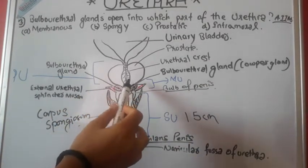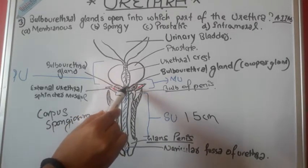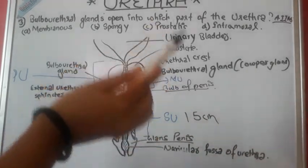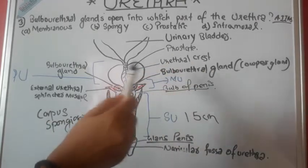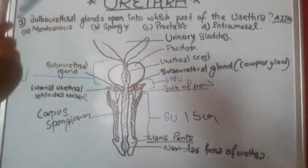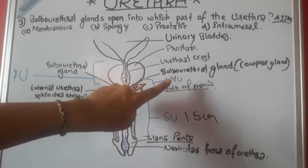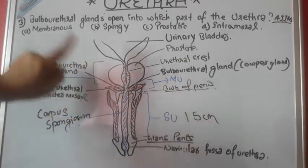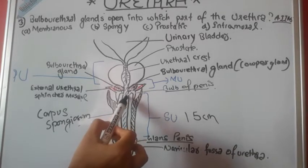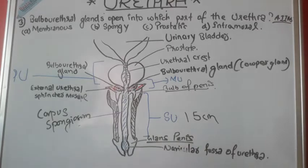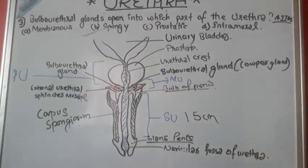Near the external urethral sphincter muscle, you can see two bulbs — these are the bulbourethral glands, also known as Cowper's glands. If asked where bulbourethral glands are located, the answer is the membranous urethra. But the question asks where they open — and the answer is the spongy part of the urethra, as they open through a duct into the spongy urethra.